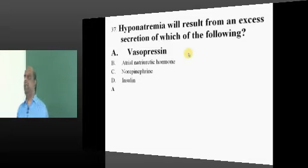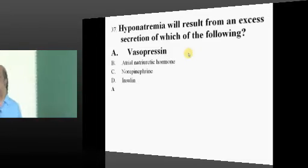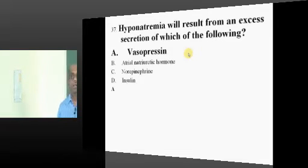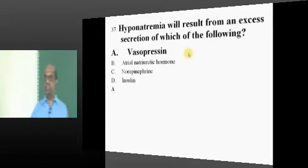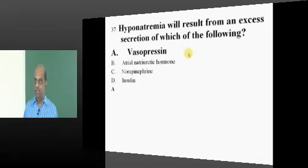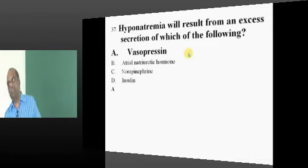Hyponatremia typically occurs whenever there is excess ADH production. Antidiuretic hormone, what will it do? It will prevent diuresis, retains water. Retained water will dilute the sodium concentration. Hence, hyponatremia will occur. Typically, SIADH, what happens? Hyponatremia.